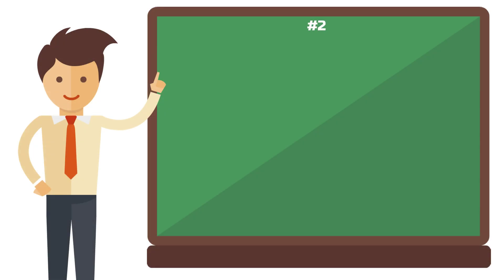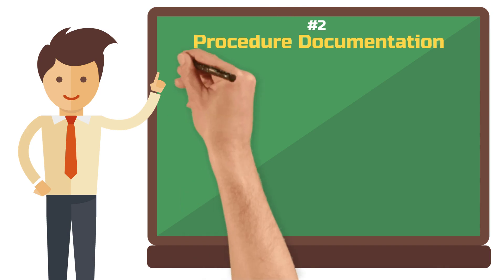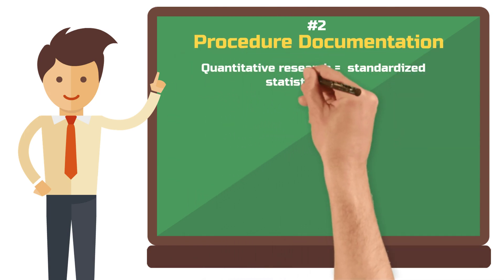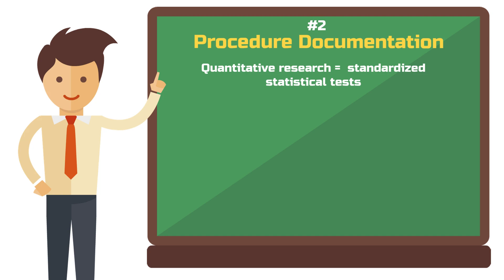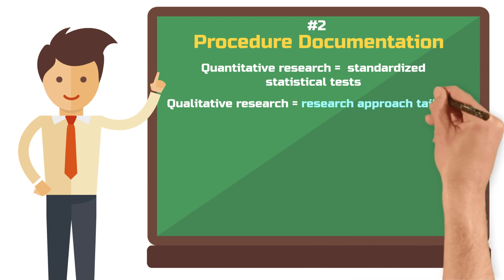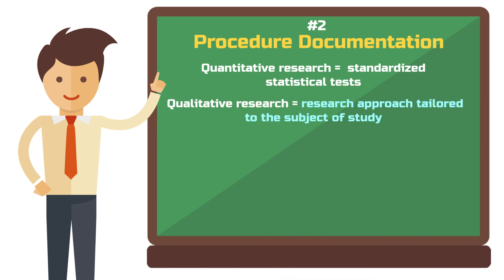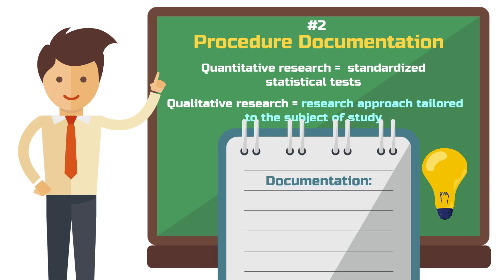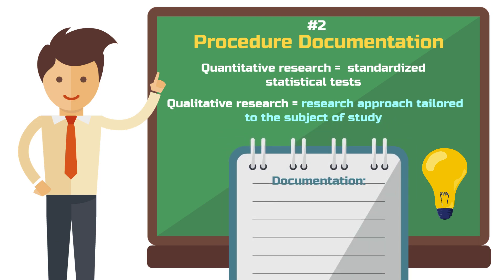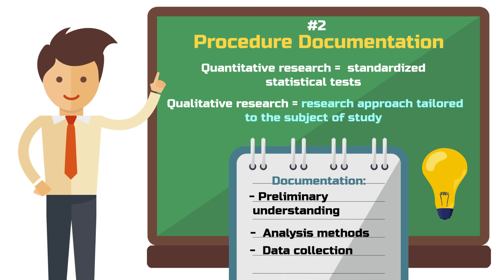Criterion number two: procedural documentation. In quantitative research, statistical tests are pretty much standardized — there is not much room for deviating from an established procedure. In qualitative research, being flexible and changing the course of a method can be of value. So if you do this, you must document the entire research process as precisely as possible. Your documentation should include the preliminary understanding that you have, the composition of the analysis methods, and the practical implementation of data collection and analysis.